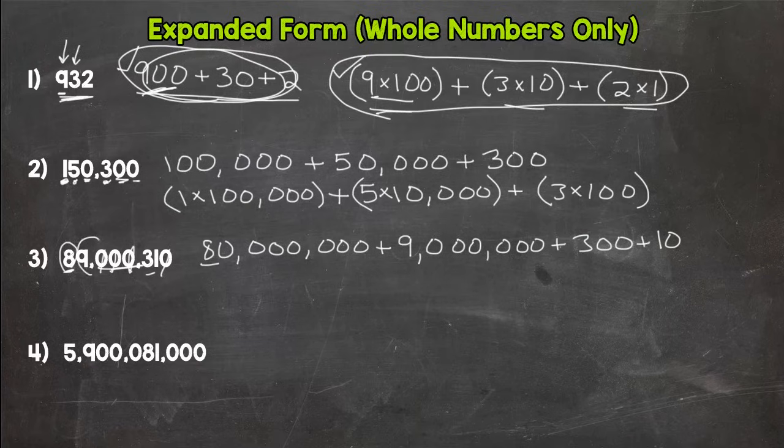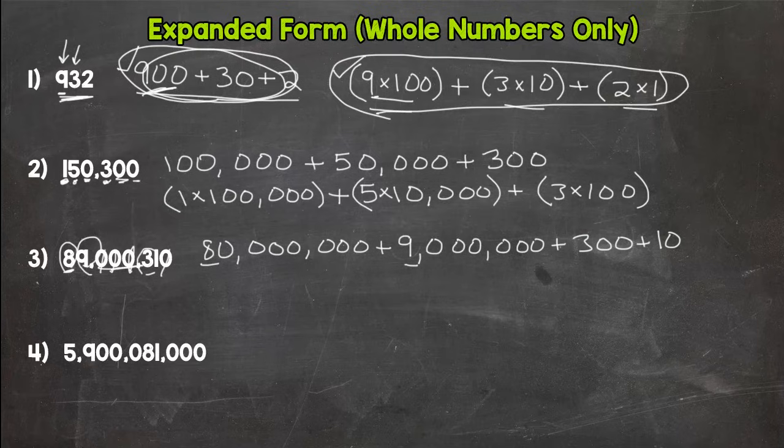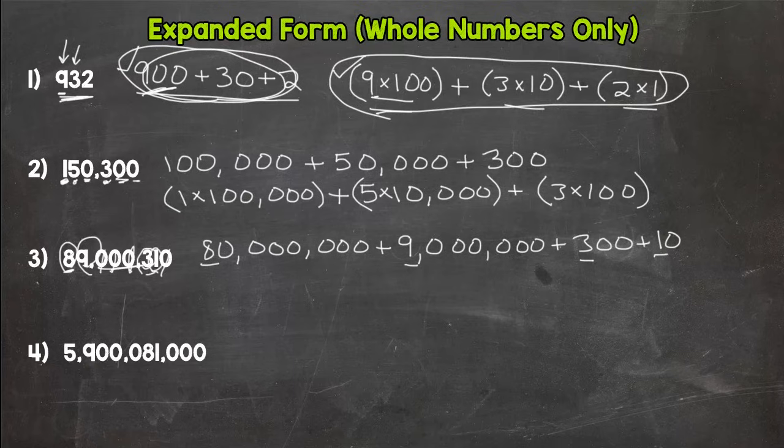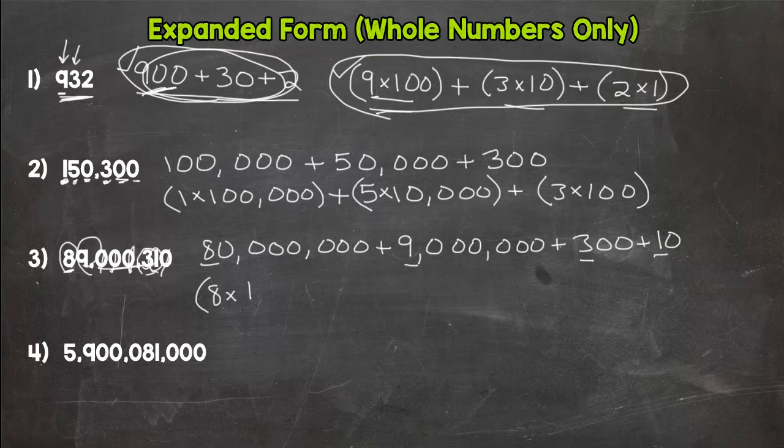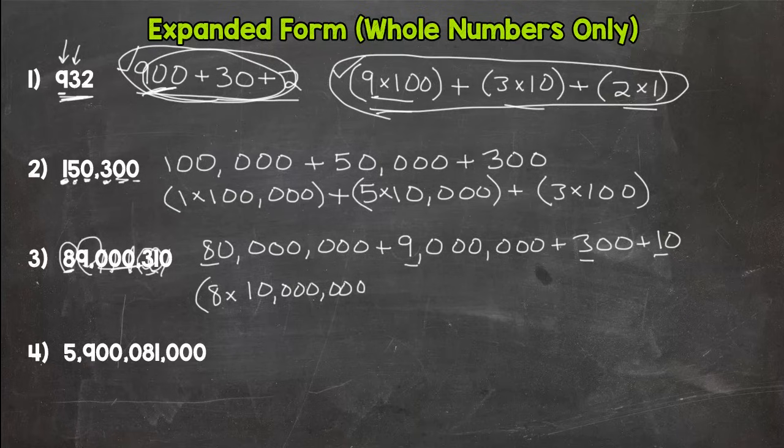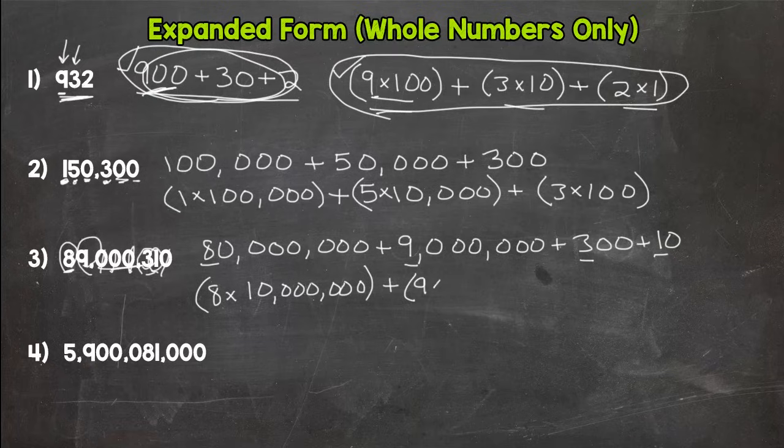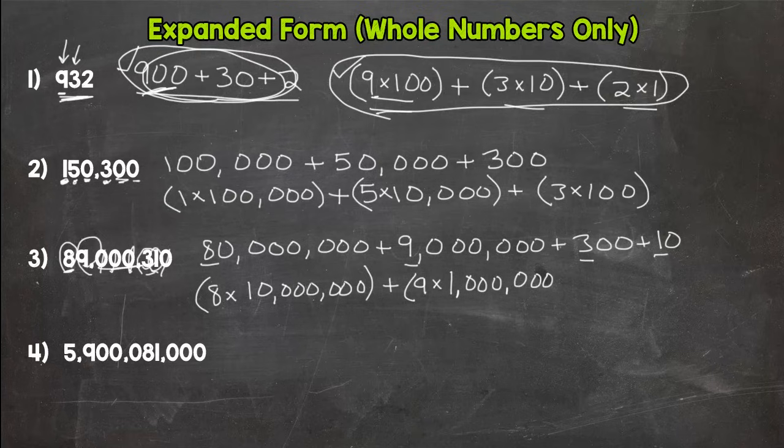So let's do the parenthesis way. 8 in the ten millions place—hopefully I have enough room here, I'm going to cram it in—plus a 9 in the millions place. What do we have next? Our 3, which is in the hundreds place, plus our 1 in the tens place.